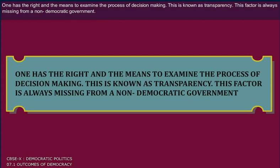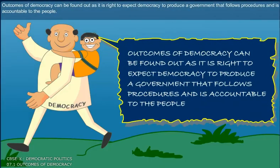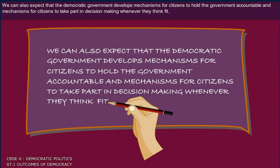This is known as transparency. This factor is always missing from a non-democratic government. Outcomes of democracy can be found out as it is right to expect democracy to produce a government that follows procedures and is accountable to the people. We can also expect that the democratic government develops mechanisms for citizens to hold the government accountable and for citizens to take part in decision making whenever they think fit.